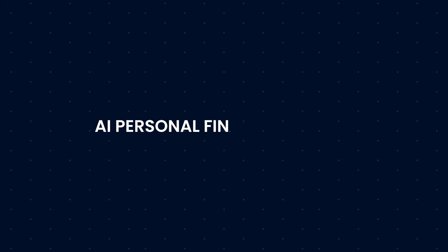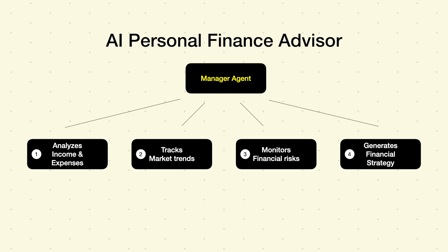In a hierarchical architecture, a manager agent oversees multiple specialized subagents, collects their outputs and compiles a final result. A good example would be an AI personal finance advisor, where a manager agent oversees the entire financial planning process, subagent 1 analyzes user income and expenses, subagent 2 tracks market trends, subagent 3 monitors financial risks, and subagent 4 generates a financial strategy. This structure is useful for complex decision-making where different agents bring in specialized insights.